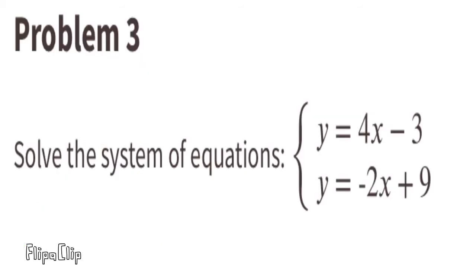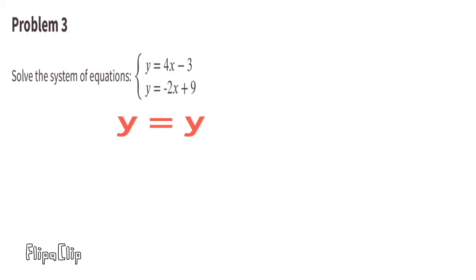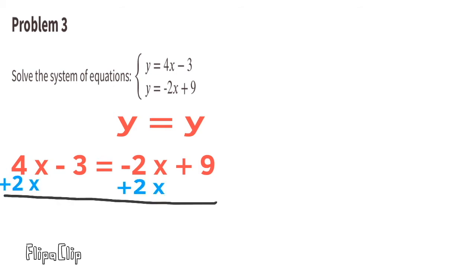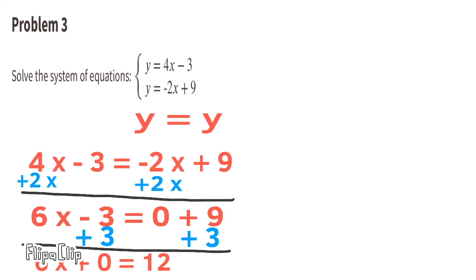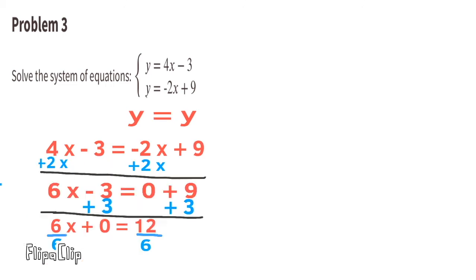Problem number 3: Solve the system of equations — y equals 4x minus 3, and y equals negative 2x plus 9. Make y equal to y, so the expressions that are equal to y are set equal to each other. Add 2x to both sides: 4x plus 2x is 6x, and the negative 2x cancels out. Add 3 to both sides: negative 3 plus 3 cancels, and 9 plus 3 is 12. Divide both sides by 6: x equals 2.